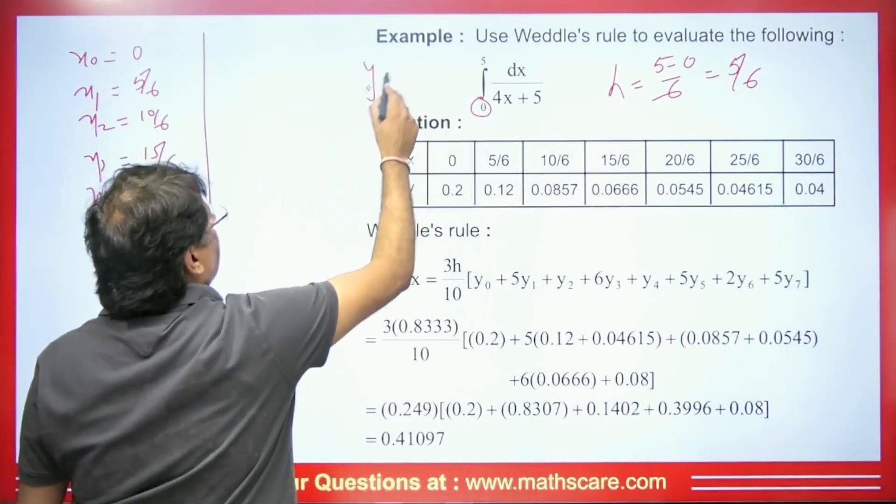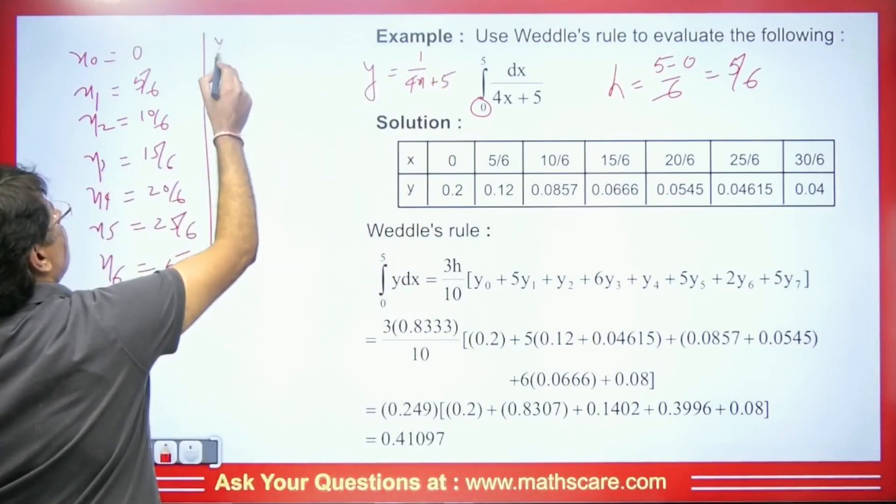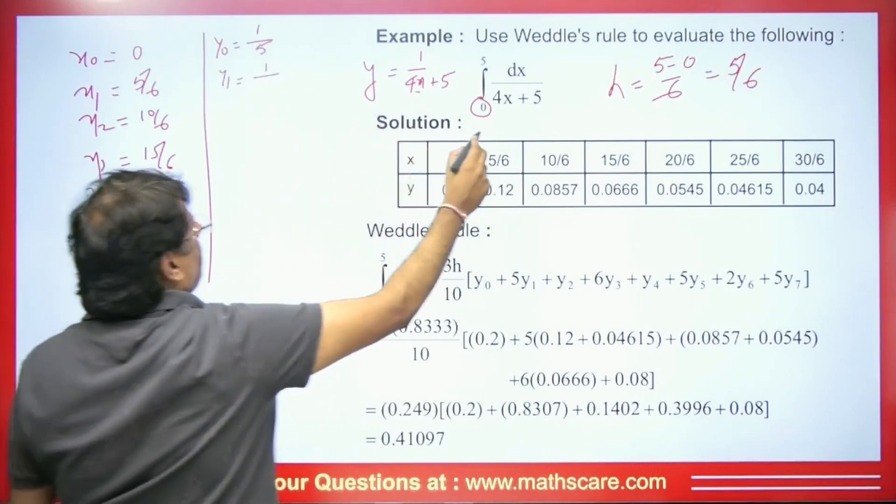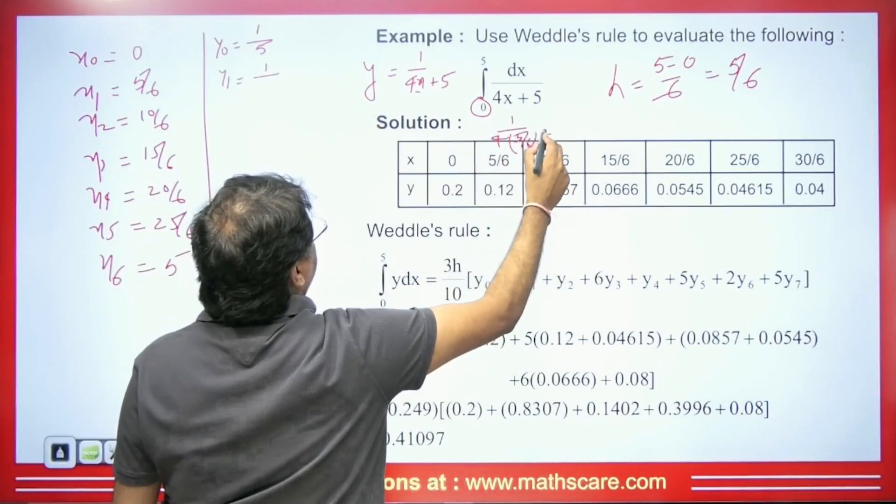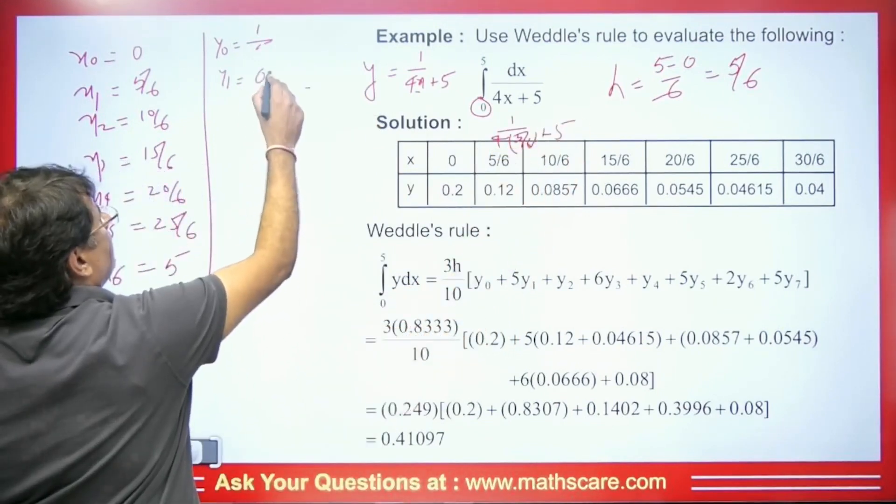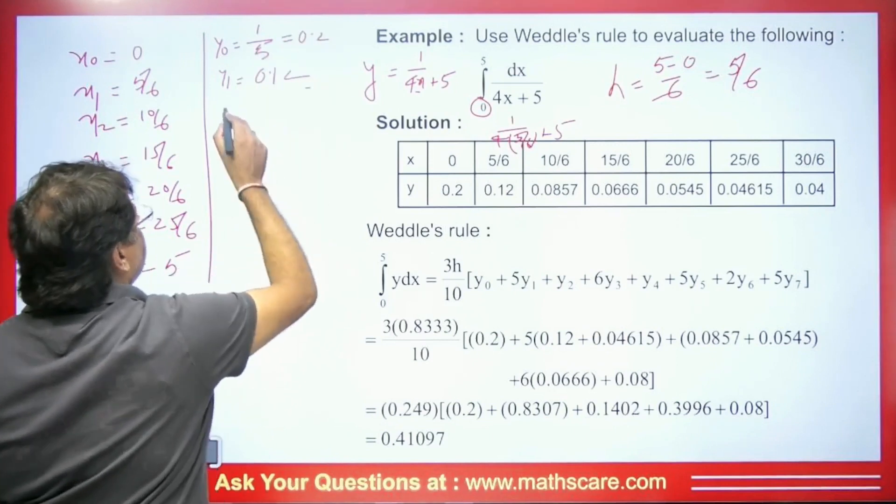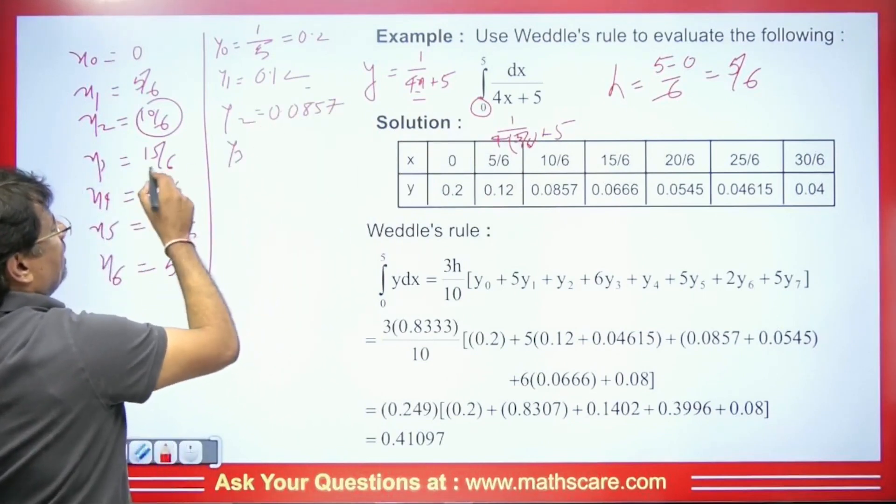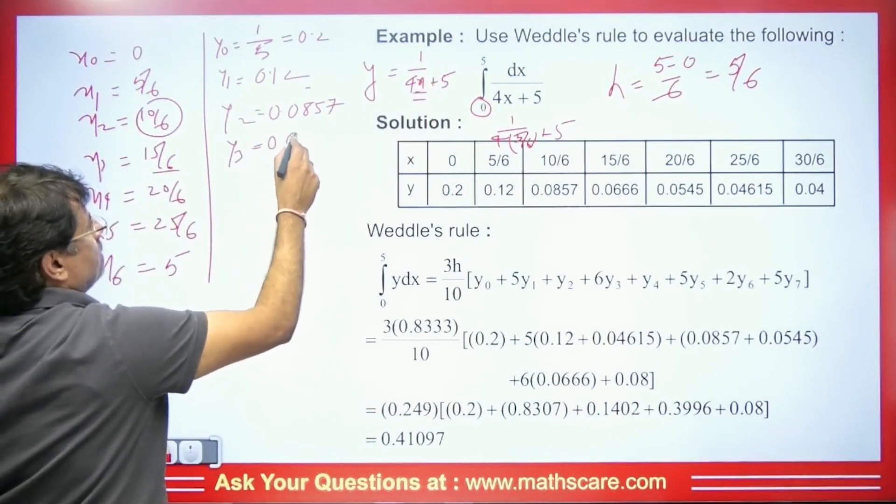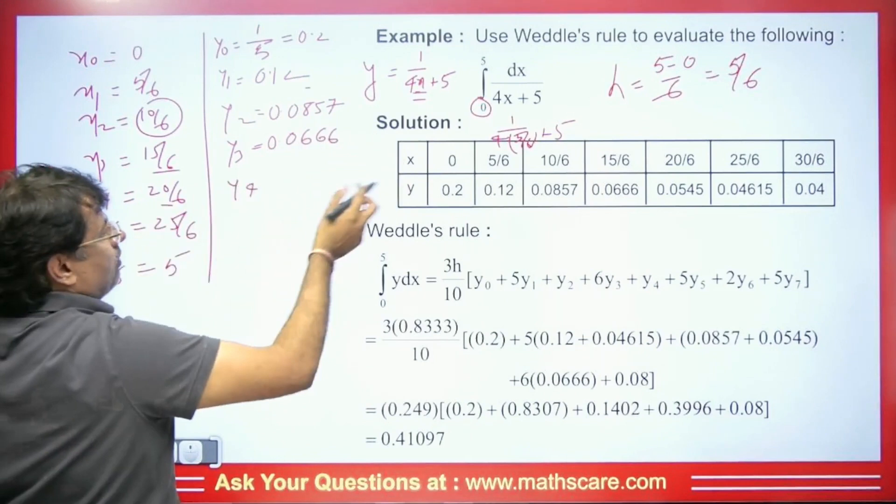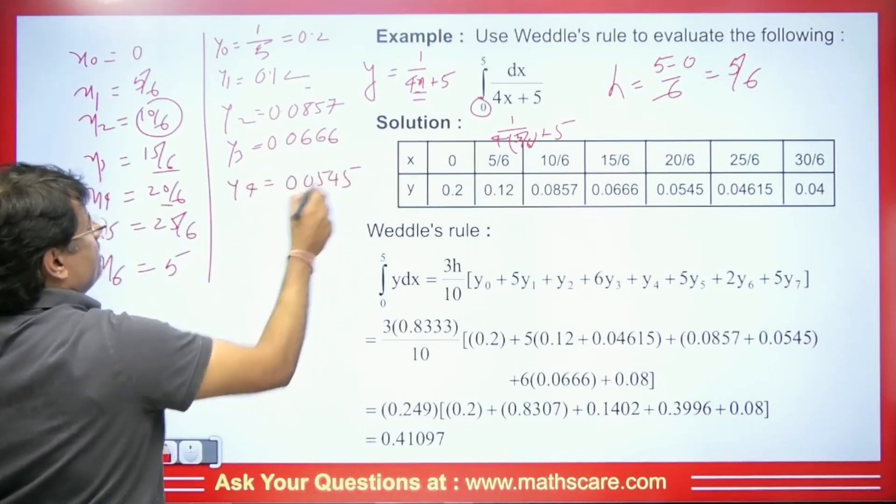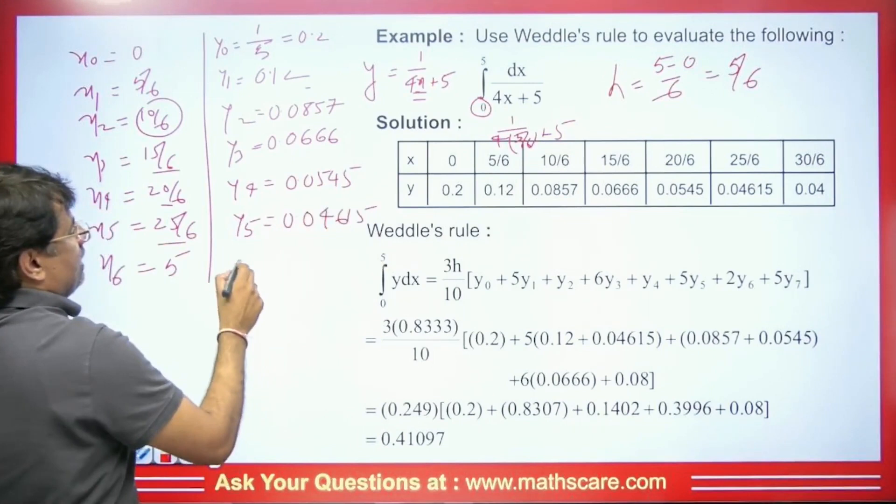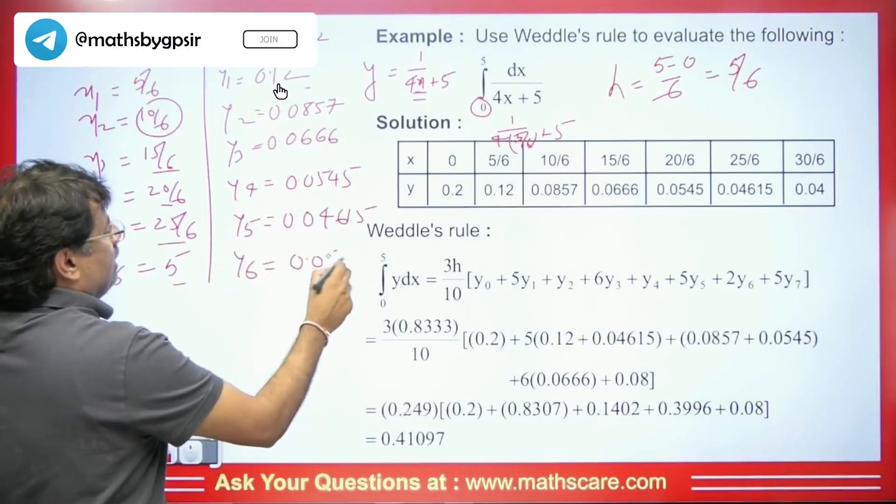Now, what are we going to do with all these values? Here, y is 1/(4x+5). Hence, the value of y₀ will be 1 and wherever we have x, we will put 0 there. Then this will be 1/5. Similarly, if we calculate y₁, then it will be 1/[4·(5/6)+5]. We will simplify this and from here, what will be the value we will get will be 0.12, and this will be 0.2. Therefore, in the same way, if we keep 10/6 here in place of x, the value we get here will be 0.0857. Whereas if we pick this 15/6 and place it here, then we will get y₃ as 0.0666. If we put 20/6 here, then the value we get will be 0.0545. In the same way, if we talk about y₅, then this will be 25/6, hence the value will be 0.04615. Similarly, when we see y₆, we take 5 and put it there and the value will be 0.04.